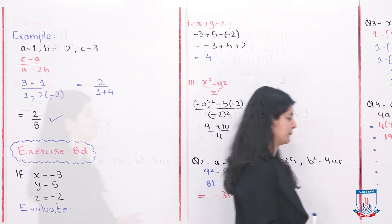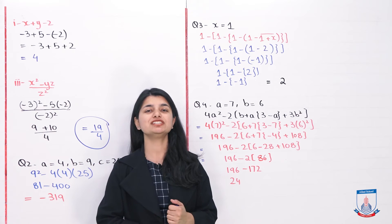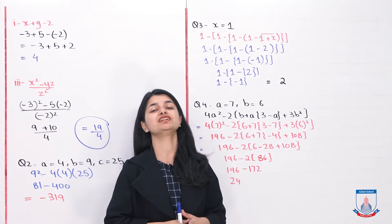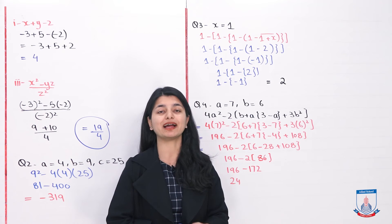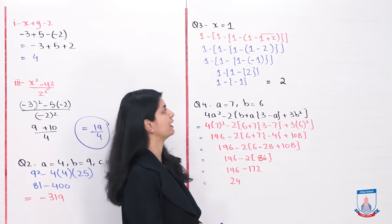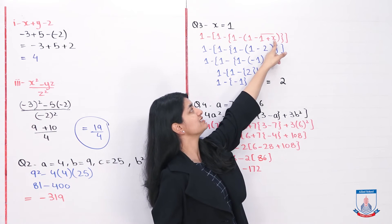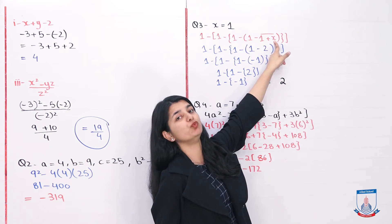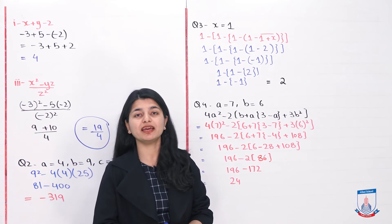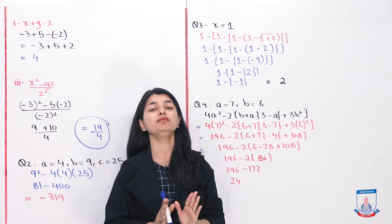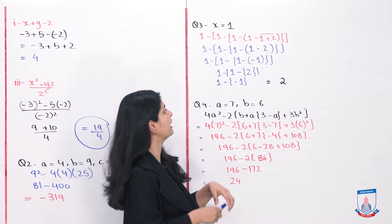Let's look at question number 3. Question 3: x value is 1. The whole question has different types of brackets you have to solve. First we look at the vinculum: 1 plus x, x value is 1, so basically 1 plus 1 is 2, and with minus 2 our vinculum is done.